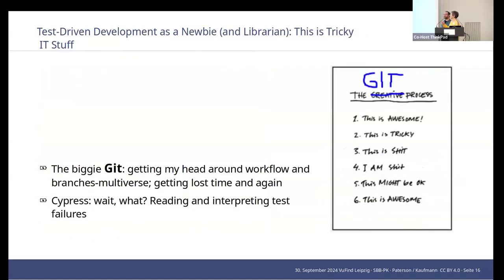You might have come across this creative process with its six stages, and this can be transferred 100% to the Git process. This is awesome — but now things get tricky. The biggie really is, and if you've been working with Git for years this might be hard to understand, but for a newbie: Git is really difficult. I had real trouble getting my head around the workflow and this multiverse thing with all those branches, and I have to say I am getting lost time and again.